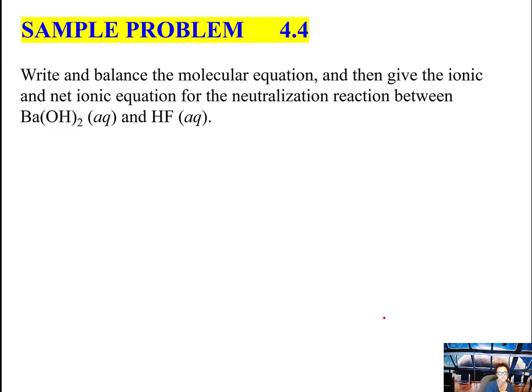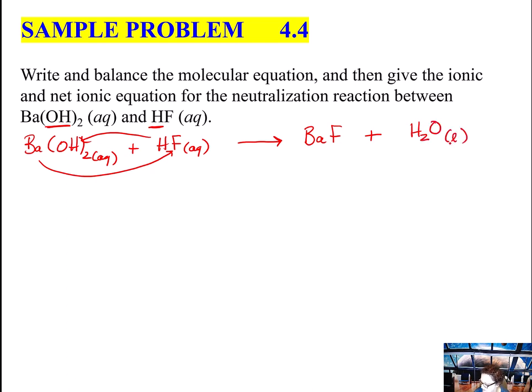Write and balance the molecular equation and then give the ionic and net ionic equation for neutralization between barium hydroxide and hydrofluoric acid. We're going to do the molecular first, and we can easily identify which is an acid and which is a base because the acid is going to have the hydrogen written first. The strong base is going to have that hydroxide. So I'm just going to predict the products. The first thing I'm going to do is I know that I'm going to swap these anions. So it's going to end up with BaF plus OH and H is H2O. And I said in these acid-base reactions, that's going to be a liquid.